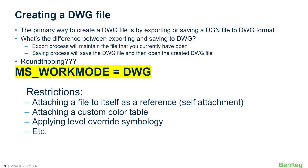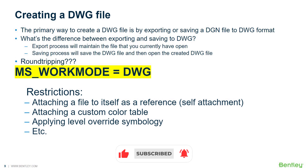In creating a DWG file, the primary way is by exporting or saving a DGN file to DWG format. A common question is: what is the difference between exporting to DWG and saving to DWG? Exporting is a process where you remain in the original DGN file and the DWG file is created in the location you set, whereas saving will save the DWG file and then open the newly created DWG file. That's the only difference, but the same process is taking place.